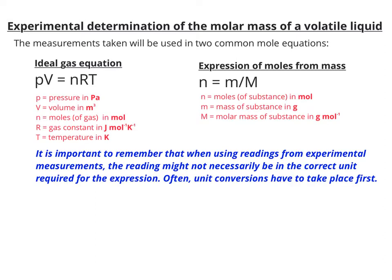When we're taking readings experimentally and using those measurements to insert values into equations, sometimes we don't actually get the automatic unit we require. For example, volume is often measured in centimeters cubed, but here it's required in meters cubed. So it's a common mistake that people make to put the numbers they get provided with straight into pV equals nRT without thinking about the unit conversions first.